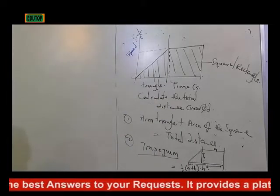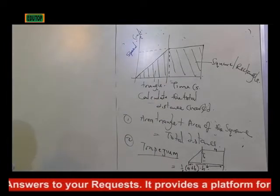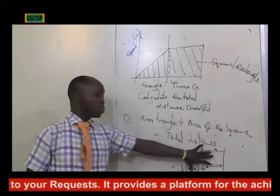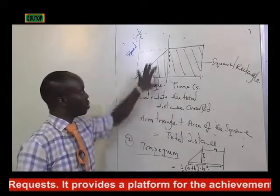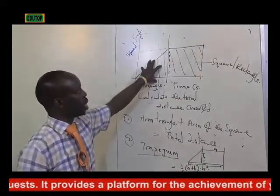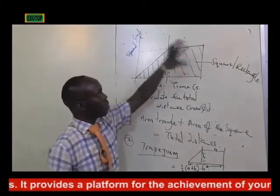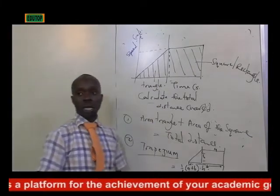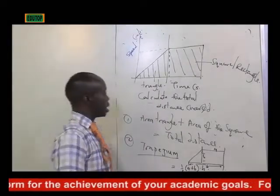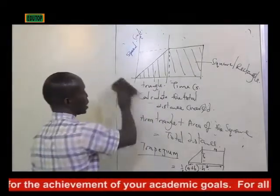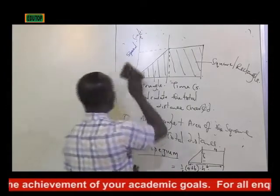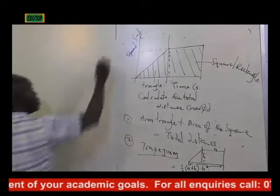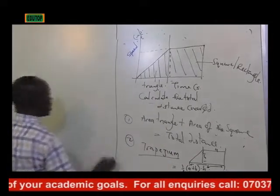So by the time you substitute all those values, you will be able to get the area of this shape. Or you can break it down: area of the trapezoid and area of the square — then add them together to get your total distance covered. Let's look at an example. Hope this is clear.